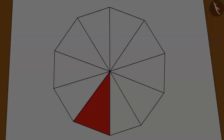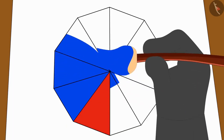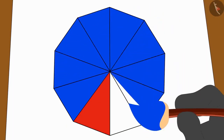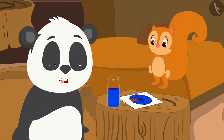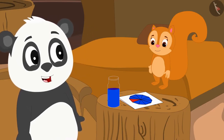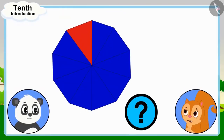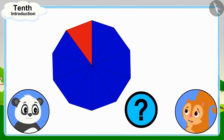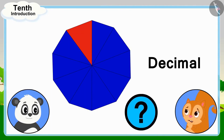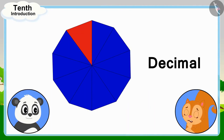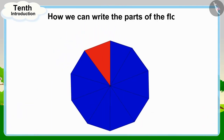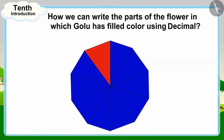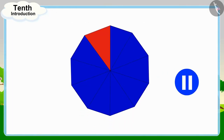Golu immediately brought a blue color bottle and began to color the rest of the flower. Golu said: Chanda, I have colored the remaining 9 parts. Chanda is wondering how she can write the parts of the flower filled by Golu using decimal. Children, can you tell how we can write the parts of the flower in which Golu has filled color using decimal? If you wish to, you may stop the video and think about the answer.